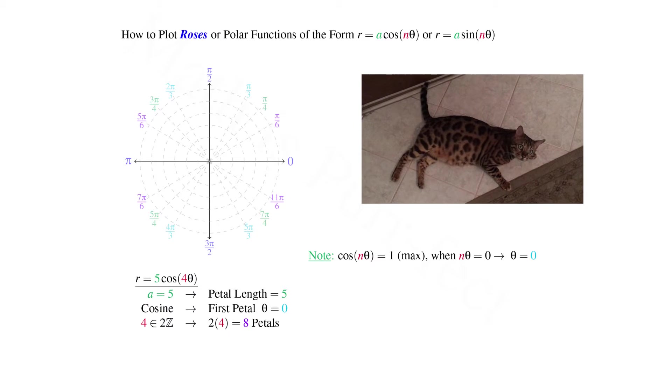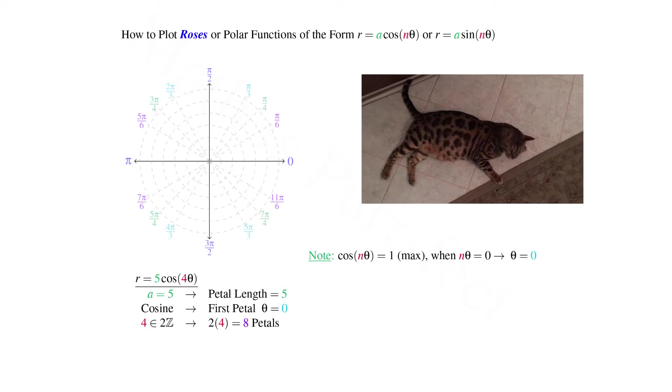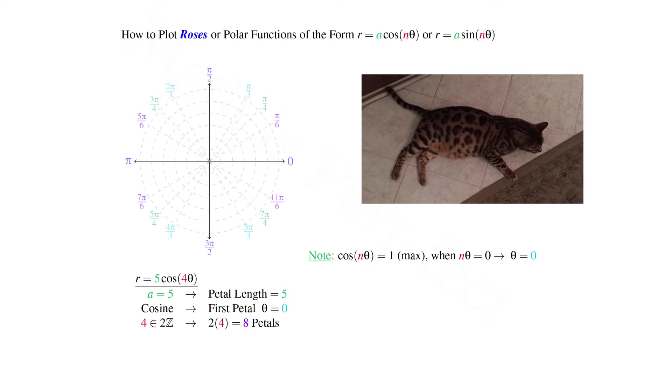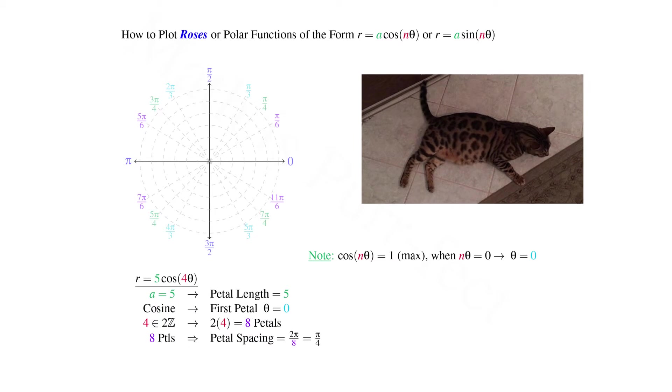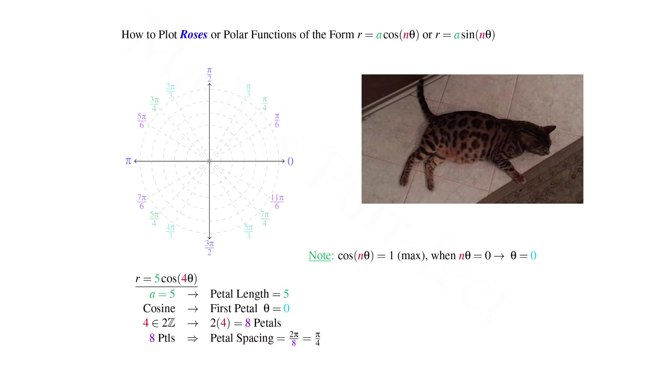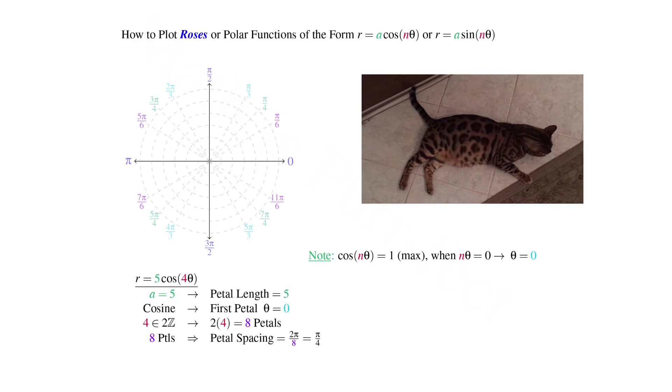Since the coefficient of theta is 4, an even number, we have that the number of petals is doubled, that is, twice 4, or 8. Hence the spacing of 8 petals evenly within 2π radians is 2π/8, or π/4 radians.